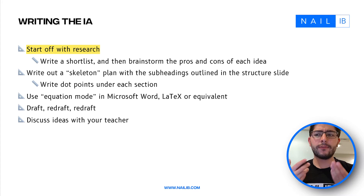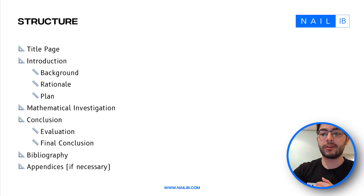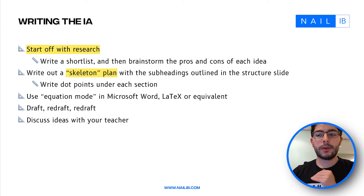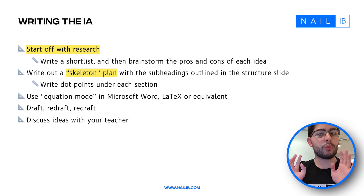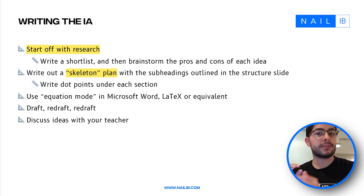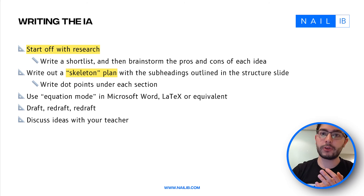Once you have a rough idea of what you want to do, create a skeleton plan with all the subheadings — title page, introduction, background, rationale, plan — and dot points underneath each one outlining what you intend to cover. When writing, use equation mode in Microsoft Word or LaTeX, or anything that looks professional for mathematics. I don't suggest using the default Microsoft Word number format as it doesn't look as good. I'll address equation mode in a later video.